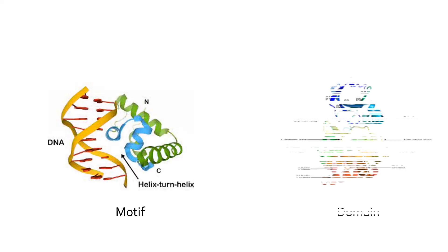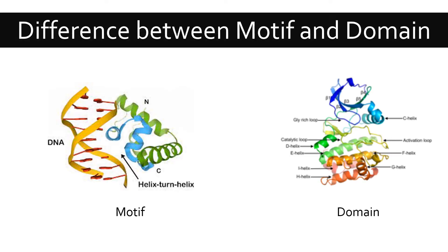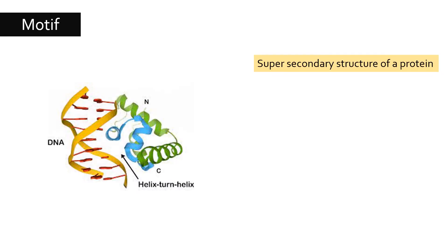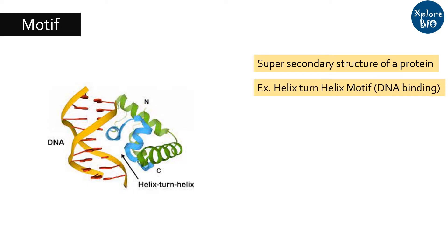Today we will see the difference between motif and domain. Motifs are super-secondary structures formed by a series of secondary structures. For example, two helices join together with a turn to form a helix-turn-helix motif. When such a motif is present in a protein, it shows that the protein has some role in DNA binding.